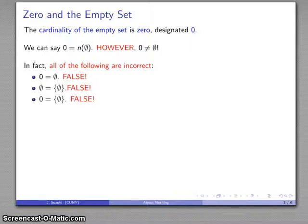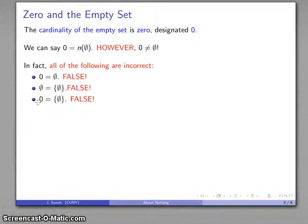This one actually makes no sense. What we have on the left is a cardinality; what we have on the right is a set. These are fundamentally different types of objects.